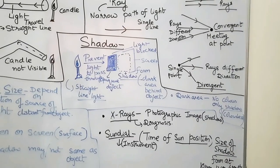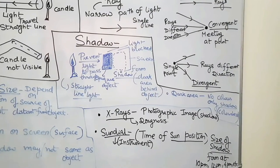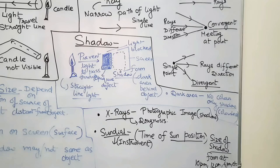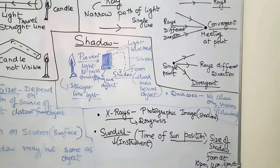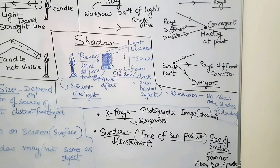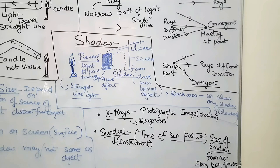Shadows also help in X-rays and sundials. An X-ray is a photographic image used for diagnosis. The shadow of original body parts like the hand or chest is captured on an X-ray film, creating a photographic image — all by the help of shadow.